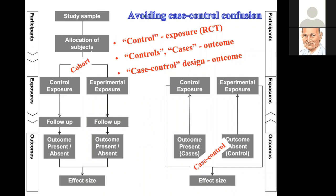A prospective study is one where the data are collected or the protocol is written before data are collected — for example, before a routinely collected database is examined. According to this definition, it is possible for a case-control study to be prospective. It is also possible for a cohort study to be retrospective, if we contrast the definition: a retrospective study does not have a protocol written before the data are collected.